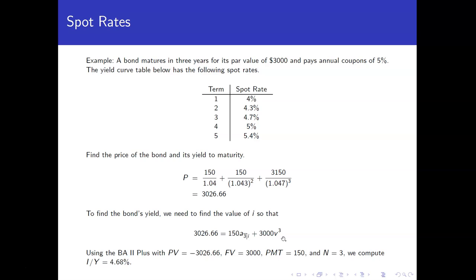In this case, we can use the BA2 Plus to help us get what the yield to maturity is. We can set the present value equal to the negative $3,026.66. Future value is $3,000. Payment is $1,050. N is 3. Number of payments is 3. And we can compute our yield to maturity, in this case, to be 4.68%.